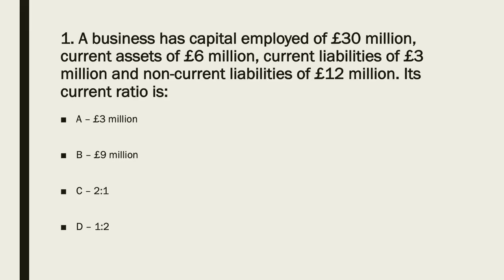Read the question and pause the video. Current ratio: you need to express as a ratio current assets to current liabilities. Therefore, the answer is C — two to one. There are two current assets to each pound of current liabilities.